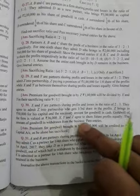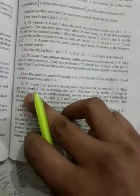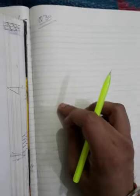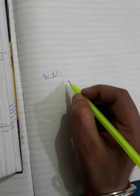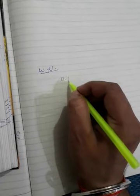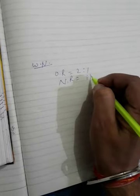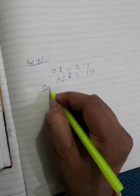First of all, according to the question, we have to pass three entries: number one, entry for the capital and goodwill brought; second, for the treatment of goodwill; third, for the withdrawal. In the working note, we have to calculate the sacrifice ratio because the old ratio is 2:1 whereas the new ratio is 1:1:1.